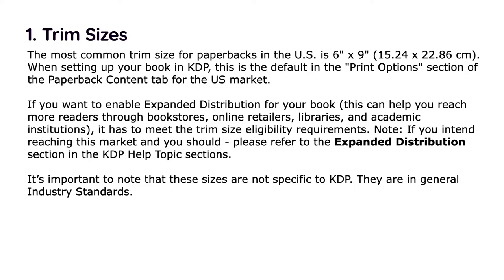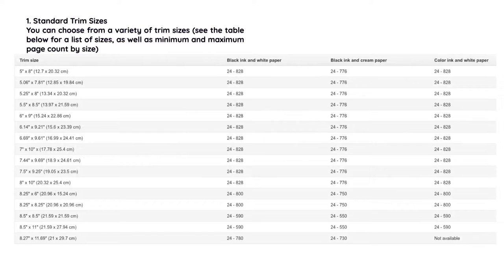It's important to note that these sizes are not specific to KDP; they are general industry standards, so you'll find the same book sizes mentioned in many places. Don't confuse trim size with book size — there's a slight difference. You can choose from a variety of trim sizes, with minimum and maximum page counts by size. For example, a 5x8 inch trim size allows a minimum of 24 pages and a maximum of 828 for black ink on white paper.